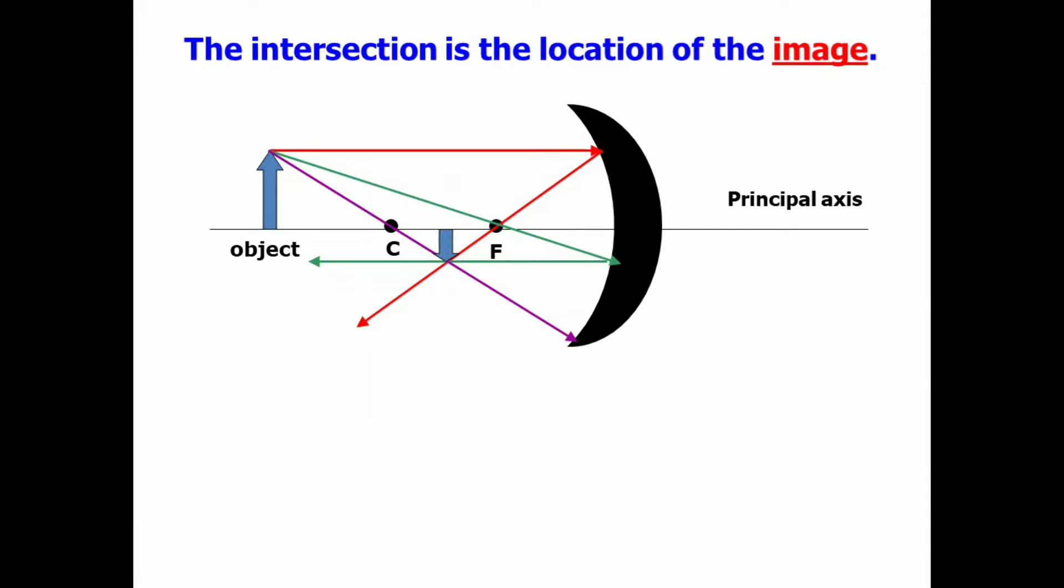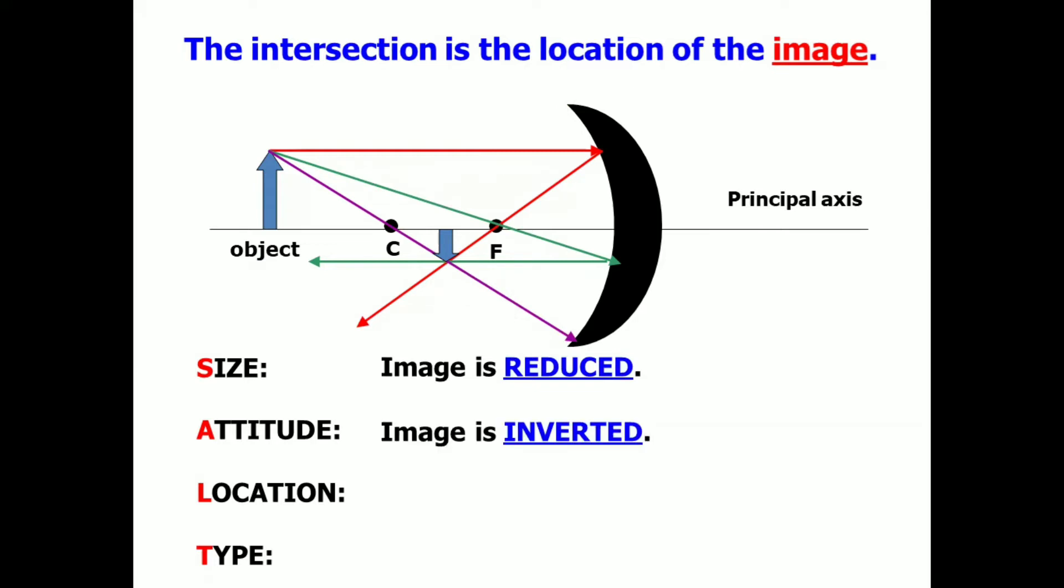This time, let us describe the characteristics of the image formed by this concave mirror. We will describe its size, attitude, location, and type. For the size, as you see, it is reduced, or it becomes smaller. For the attitude, the image is inverted.